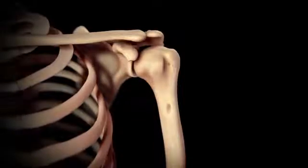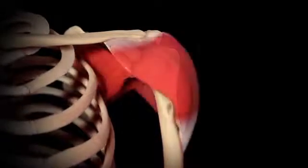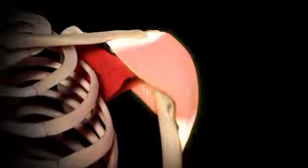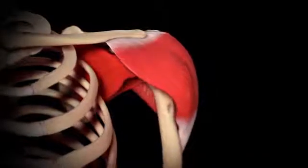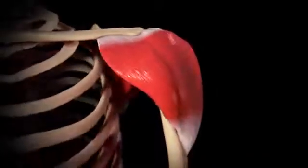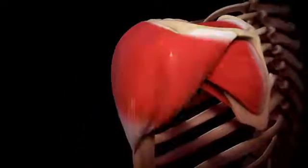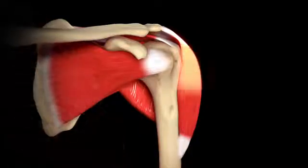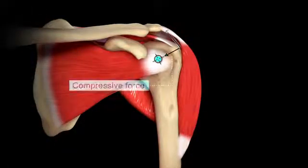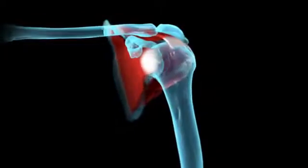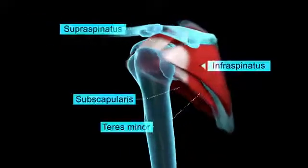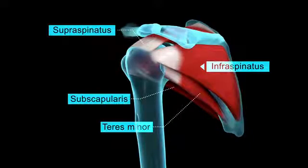Shoulder motion and stability is achieved via the coordinated contraction of the deltoid and rotator cuff. The deltoid is the largest muscle in the shoulder and elevates the arm. It consists of three distinct heads: anterior, middle, and posterior. The middle deltoid wraps around the greater tuberosity to generate a stabilizing compressive force. The rotator cuff is composed of four muscles that generate the torque necessary for rotation, and their anatomic arrangement generates humeral head compression and glenoid centering at all joint positions.